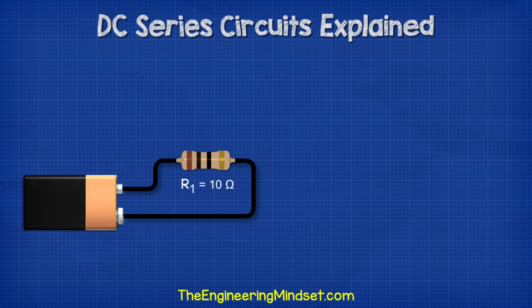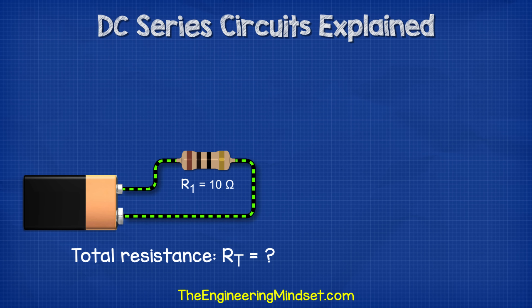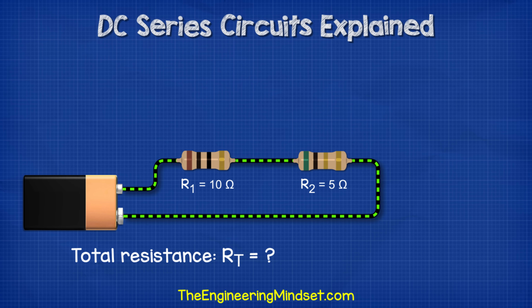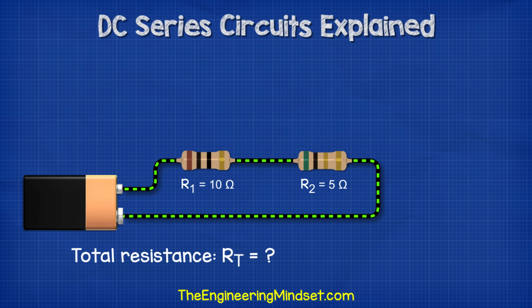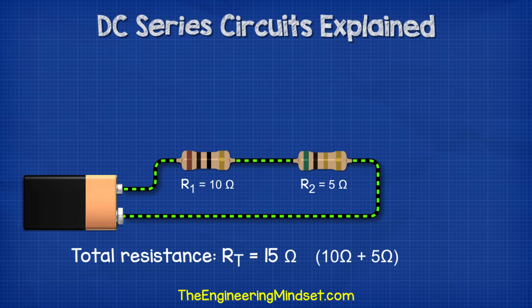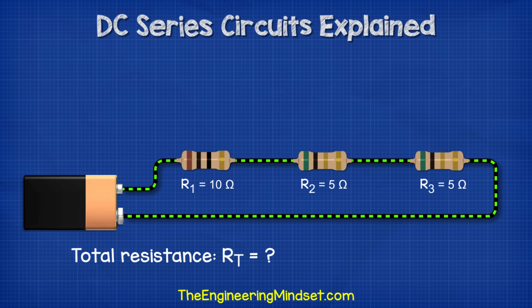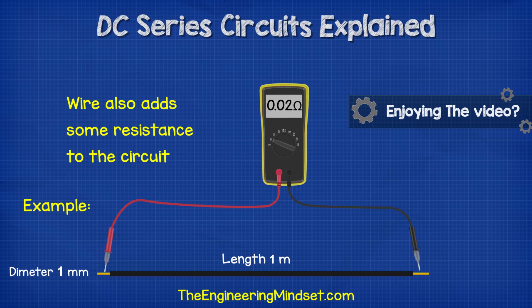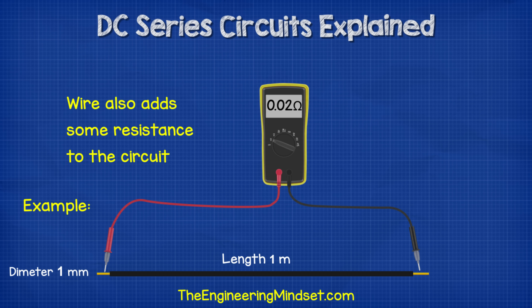Let's say we have a circuit with a single resistor, R1, with a value of 10 ohms — the total resistance is just 10 ohms. If we then added a second resistor R2 with 5 ohms, the total resistance is now 15 ohms: 10 plus 5. If we added another 5 ohm resistor, the total resistance is now 20 ohms. In reality, the wires too will add some resistance, but this is very small — you might need to account for this depending on how accurate your design needs to be.